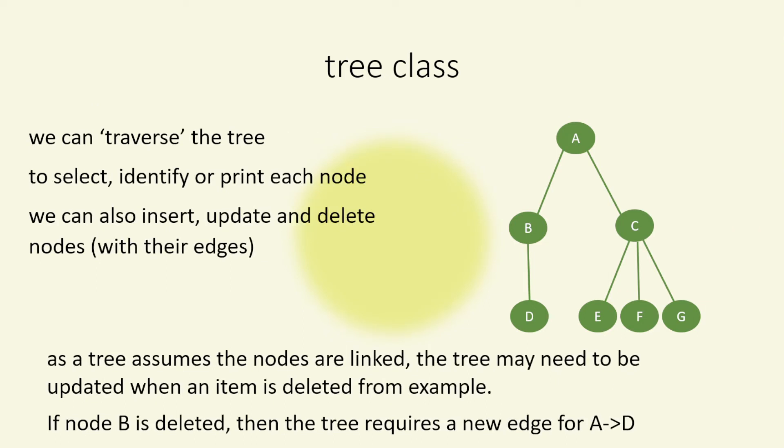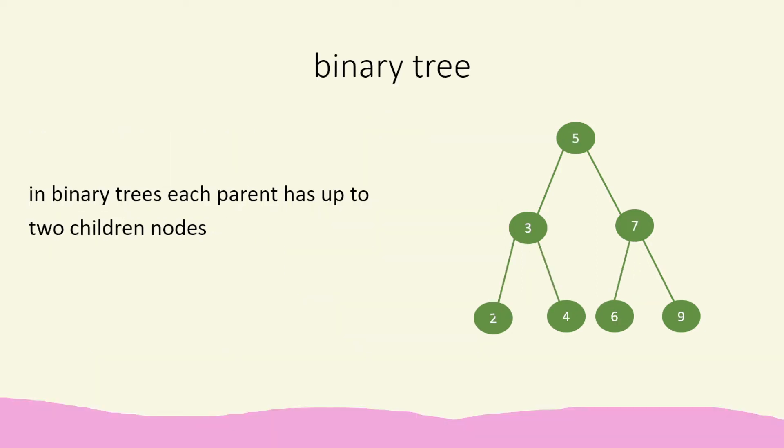Again, we traverse a tree. We can insert, update and delete. And again, we have to think about edges. So if we deleted B, would we have an edge from A to D, for example? Now in computer science, we often use binary trees to learn how we can insert and delete, keep order, etc. So binary trees are often used in data structures and algorithms to learn how we can implement code on a tree.